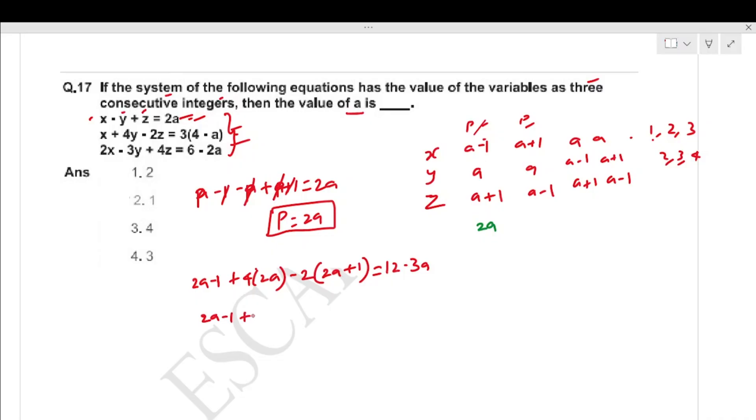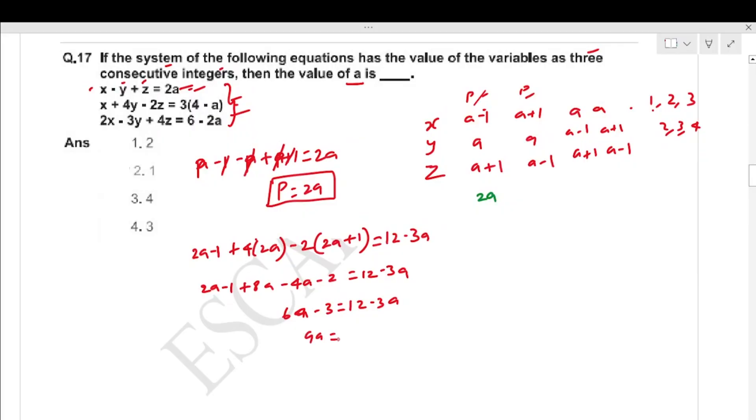Three equations with x, y, z. First equation: x plus y plus z equals 3. Let x, y, z be consecutive integers: a minus 1, a, a plus 1. So a minus 1 plus a plus a plus 1 equals 3a equals 3, giving a equals 1. Second equation: 2a minus 1, 2a minus 2, 2a minus 1. This gives p equals 2a.